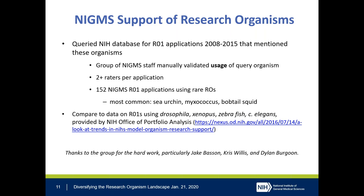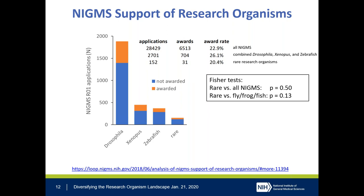The numbers are small — 152 applications and 31 awards — so everything must be taken with that in mind. That said, the award rate for rare research organisms at 20.4% is not significantly different from the award rate for all NIGMS applications, nor from those for the combined Drosophila, Xenopus, and Zebrafish applications. This means that if an application arrives at NIGMS and is scored, we award it at essentially the same rate as anything else. We're hoping people understand that what we're interested in is the scientific question being asked.